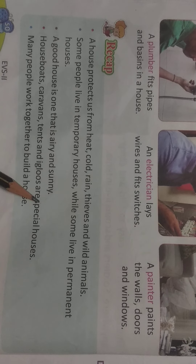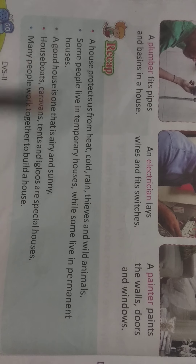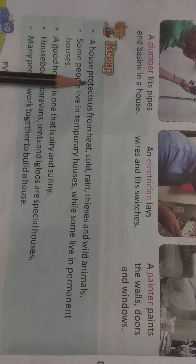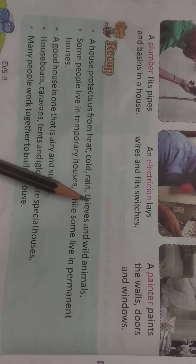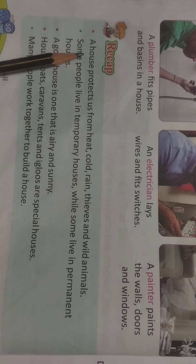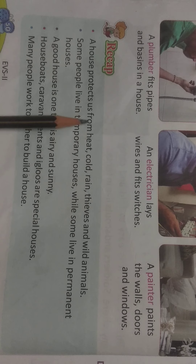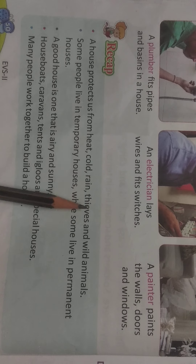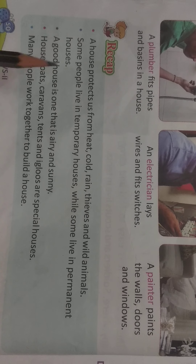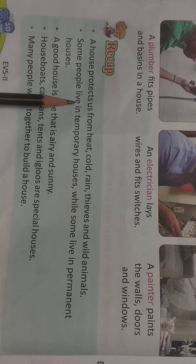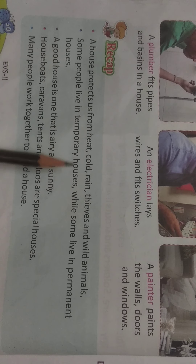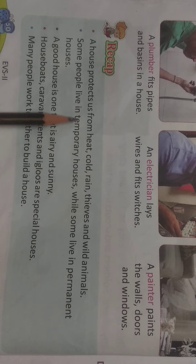Now let us come to the recap. We have already discussed all these important points. Once again I will read - please pay attention. A house protects us from heat, cold, rain, thieves, and wild animals. Second point: some people live in temporary houses while some people live in permanent houses.